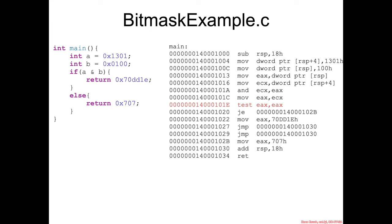And finally, in our Boolean logic section, we have this bitmask example.c. In the code, we have a, which is set to some hex value, b, which is set to some hex value, and then an if statement where it does a bitwise